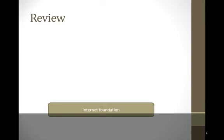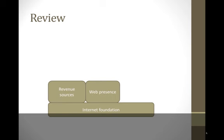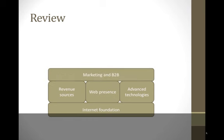So what have we talked about so far? We started with the Internet Foundation, looking at all the different technologies and the history of the Internet, figuring out what exactly it is we're talking about. Then we got into revenue sources and web presence — how to collect or make money, how to present ourselves — and then looked at some advanced technologies like social media, mobile, and auctions. All of these are being used for marketing and business-to-business.